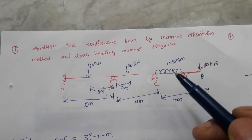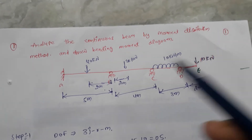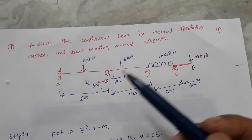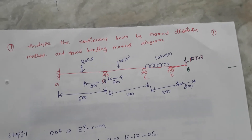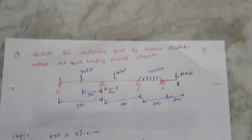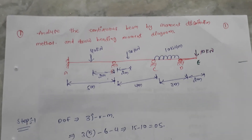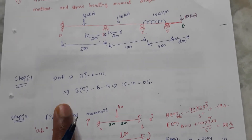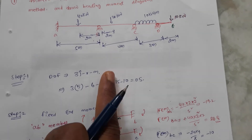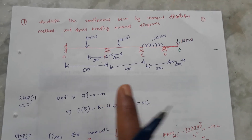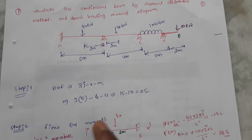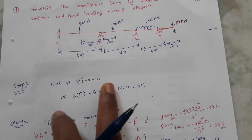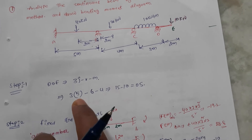Today we will discuss analysis of a continuous beam by the moment distribution method and draw the bending moment diagram. We need to draw the bending moment diagram for the given structure using the moment distribution method. Step 1: find how many unknown displacements are in the structure, because moment distribution is a displacement method. Degree of freedom equals 3j minus r minus m.